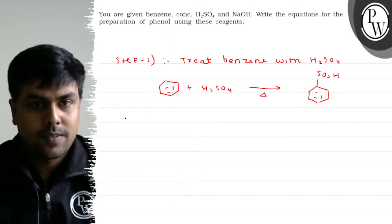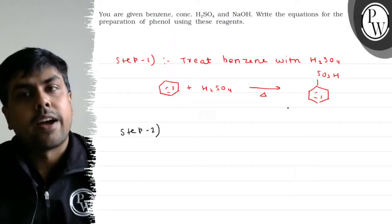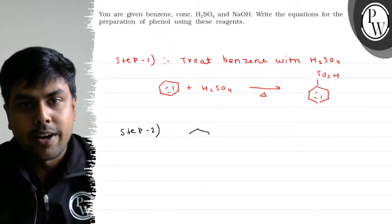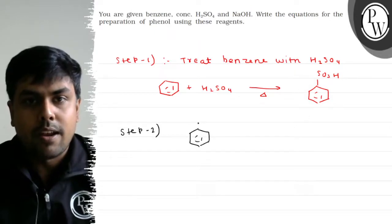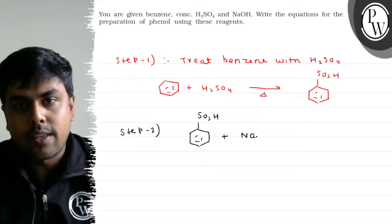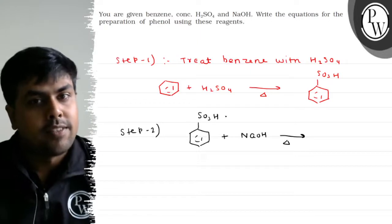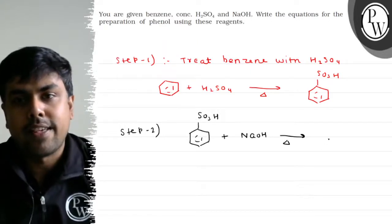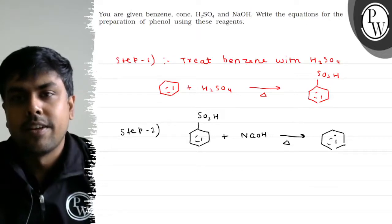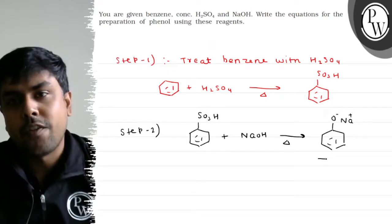Step 2: We take benzene sulfonic acid and treat it with NaOH by heating. Sulfonic acid is a very good leaving group, so we will get phenoxide ion (O minus Na plus).